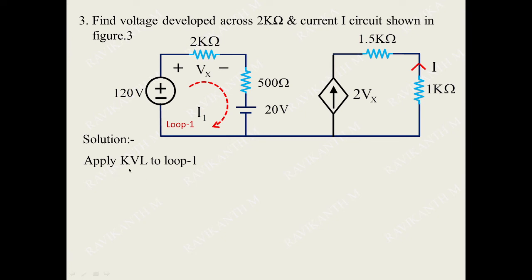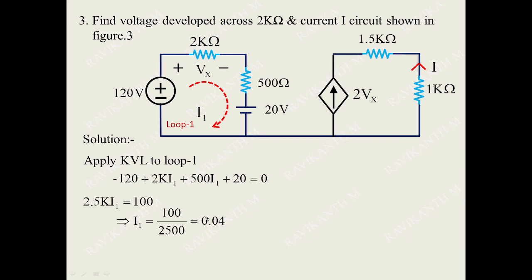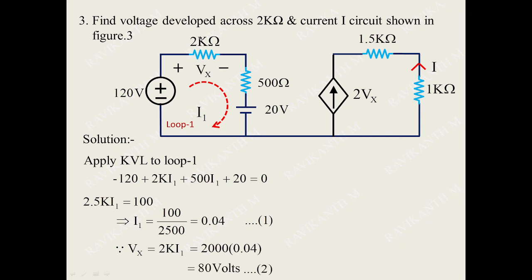This gives 2.5k times i1 equals 100 volts, because minus 120 plus 20 gives minus 100, and flipping the sign gives plus 100 on the right side. This yields i1 equals 0.04 amperes. Once we get i1, we can find Vx: Vx equals 2k times i1 equals 2000 times 0.04 equals 80 volts. So the voltage developed across 2 kΩ is 80 volts.